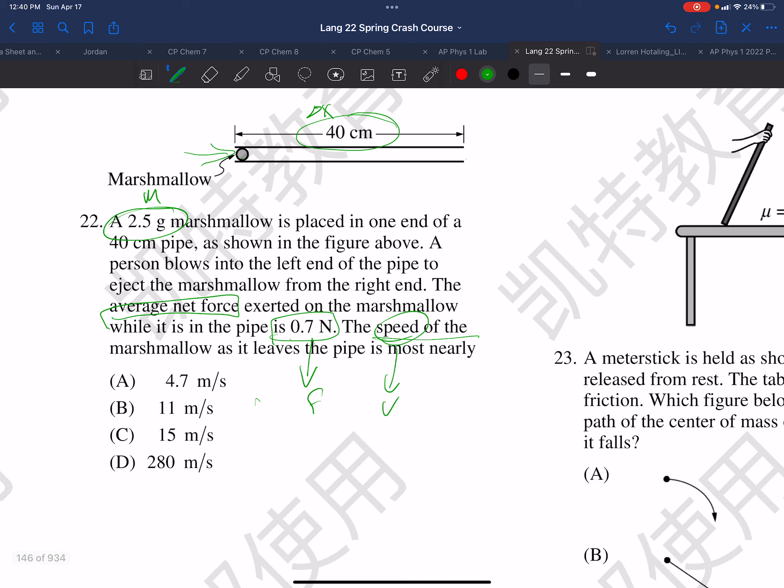There's a force being applied for a certain length of time so we might look at our momentum. We have F delta t equals J equals delta p equals m delta v. Now we know the force, we know the mass, we are looking for delta v, so somehow we would need to get the delta t.